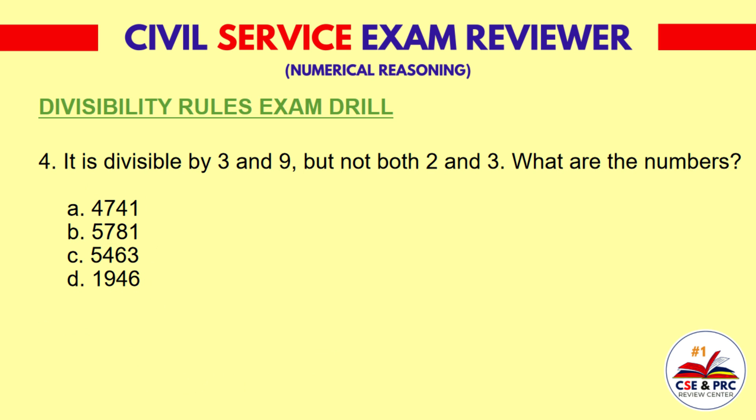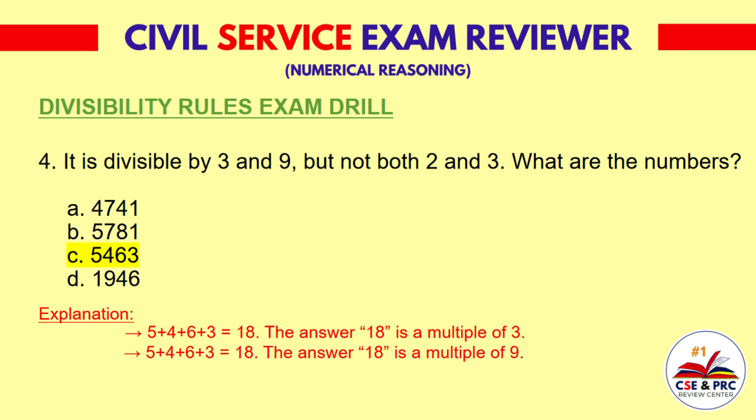Question 4: It is divisible by 3 and 9, but not both 2 and 3. What are the numbers? A. 4,741. B. 5,781. C. 5,463. D. 1,946. The answer is C: 5,463. Explanation: 5+4+6+3 equals 18. The answer 18 is a multiple of 3. The answer 18 is also a multiple of 9.